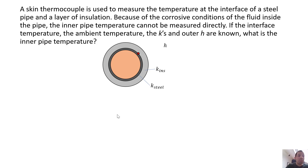In this example problem, we're going to use the thermal resistance method to solve for intermediate temperatures in a thermal circuit. This problem states that a skin thermocouple is used to measure the temperature at the interface of a steel pipe and a layer of insulation.